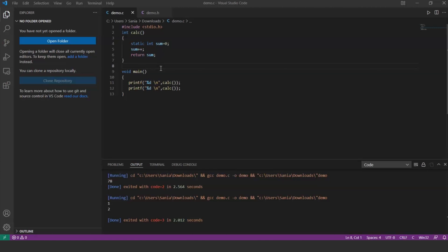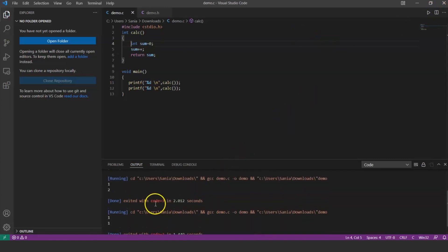Let's remove this keyword static and now run the program. As you can see the previous output with static keyword, for every function call the value of the sum is incremented. Without static keyword, the value will be same for every function call. I hope you got the idea of using a static keyword.